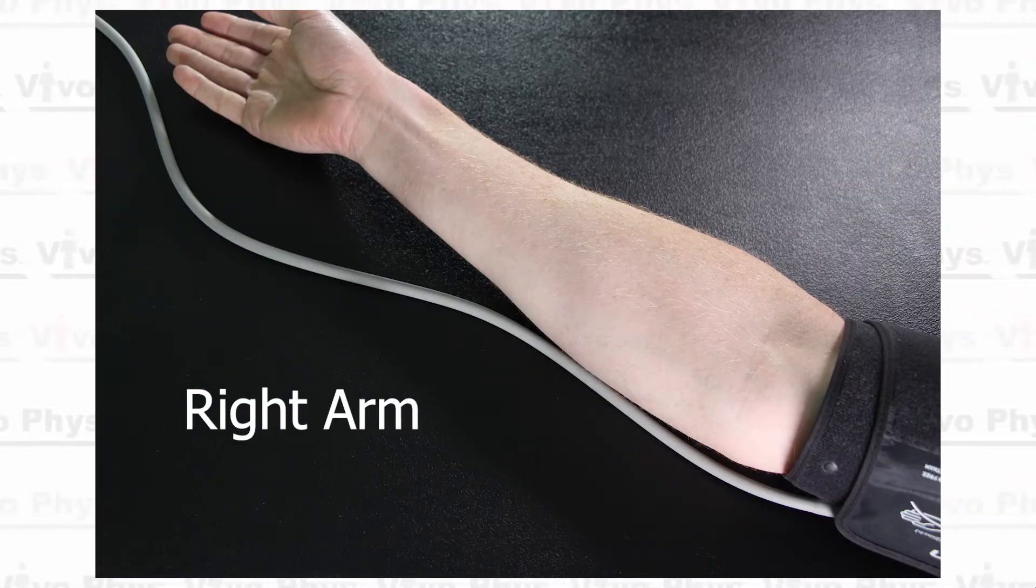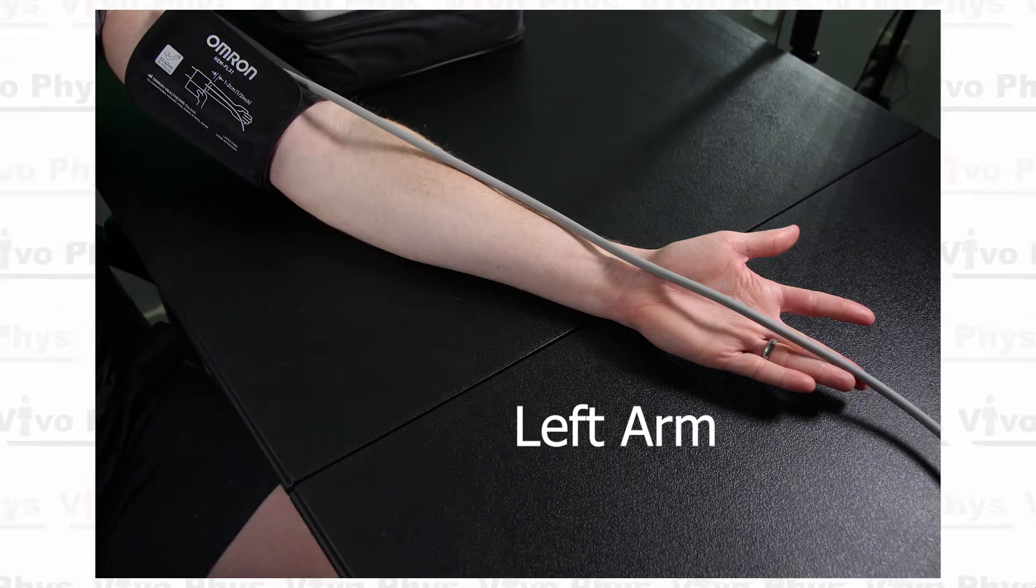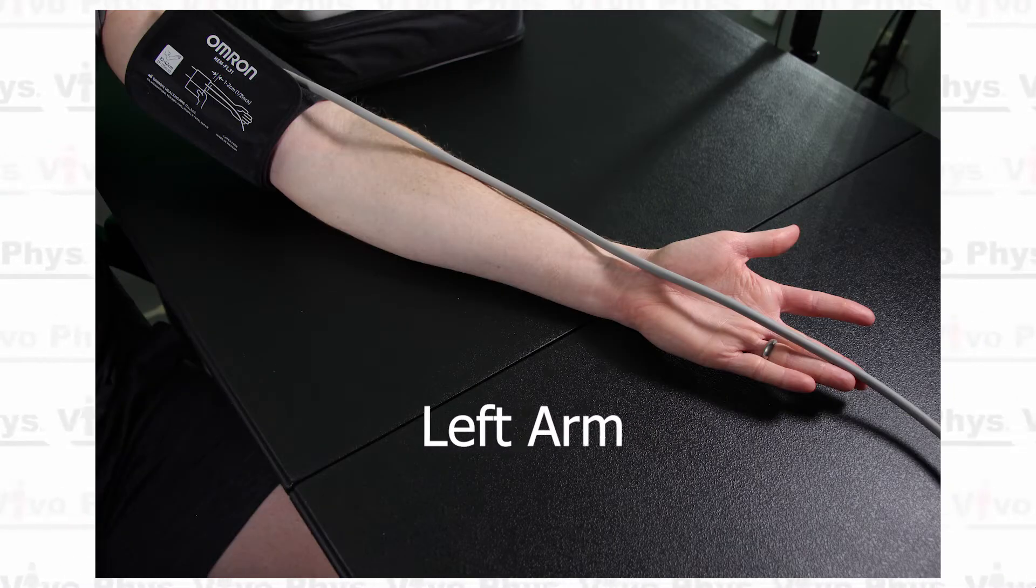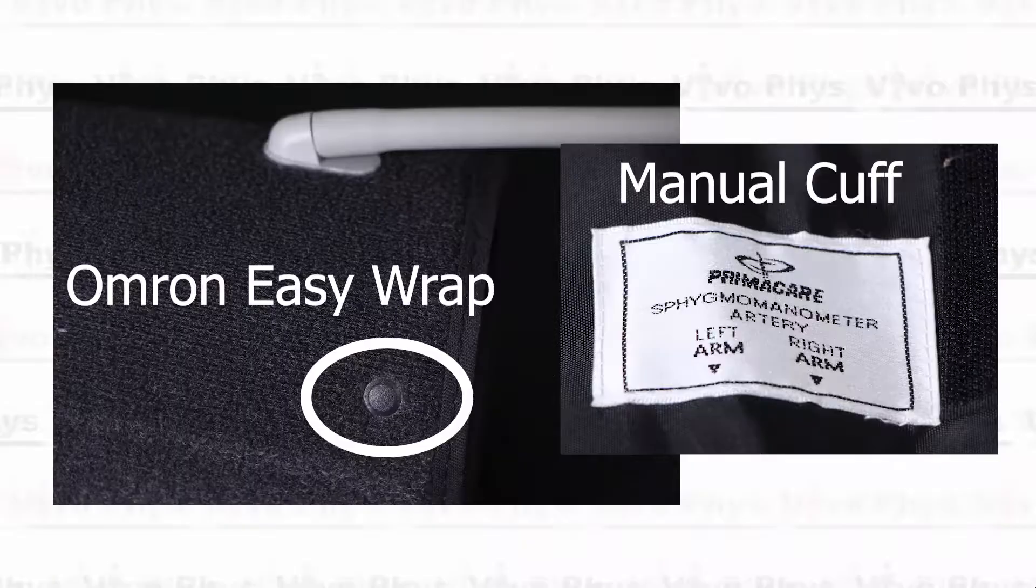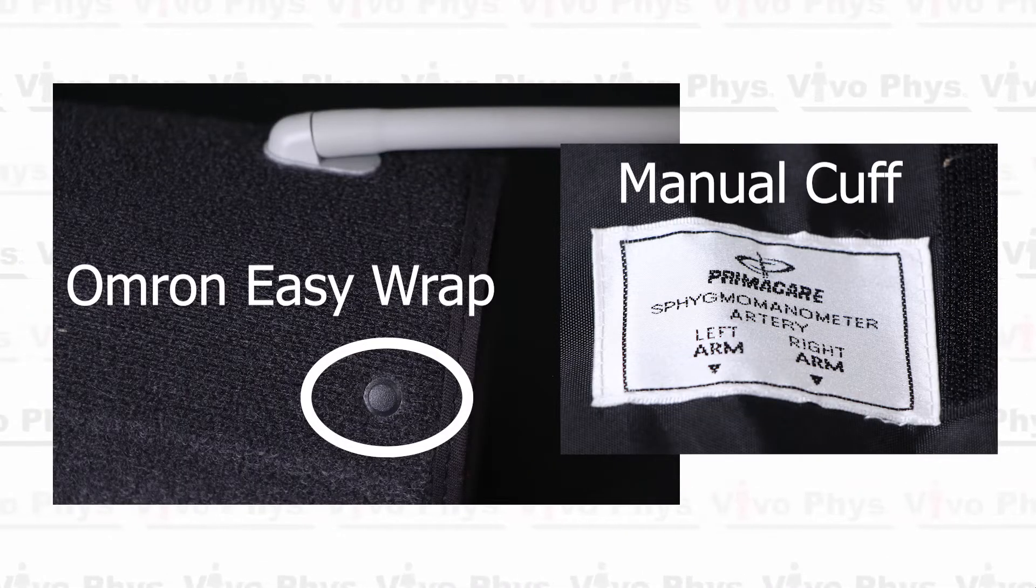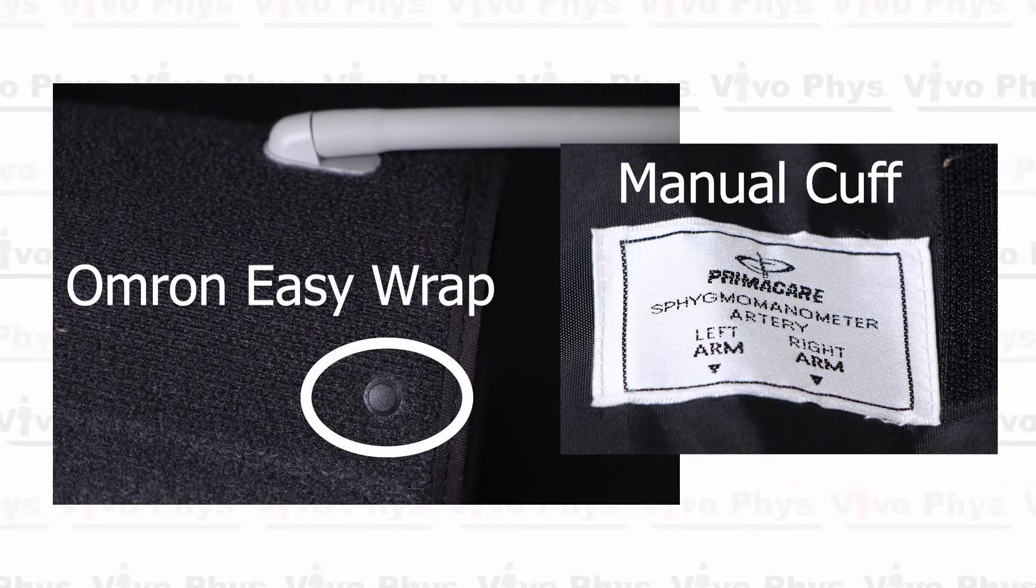So this is different from doing it on the left arm. The right arm, the air tube has to be almost under the arm where as with the left arm you want the air tube to go on top of the arm. Regardless of which arm you're choosing, make sure that the artery symbol on the cuff is on top of the artery in your arm and this is going to be just to the inside of the end of the biceps brachii, so your biceps muscle.